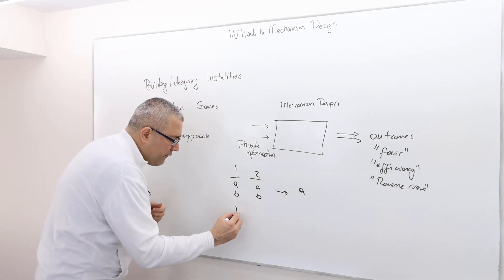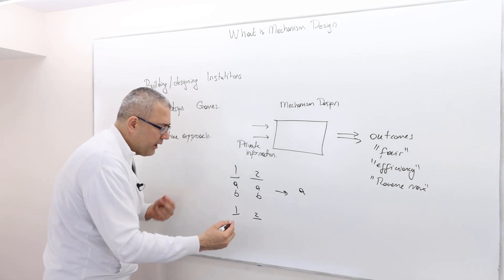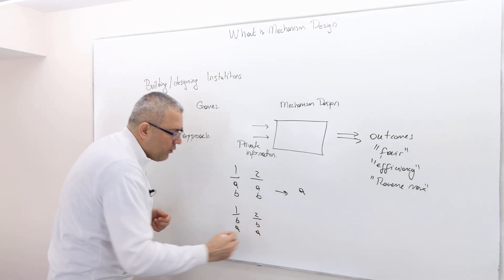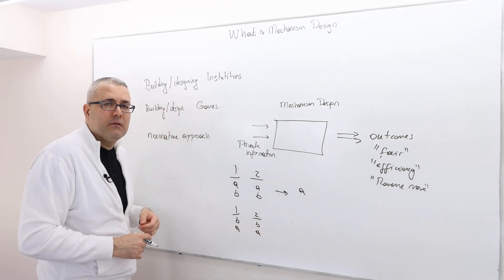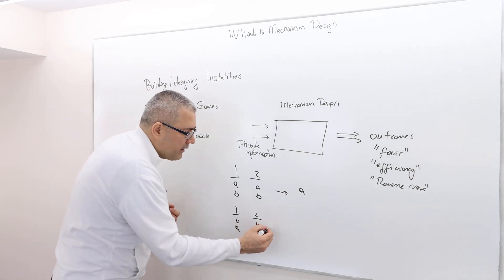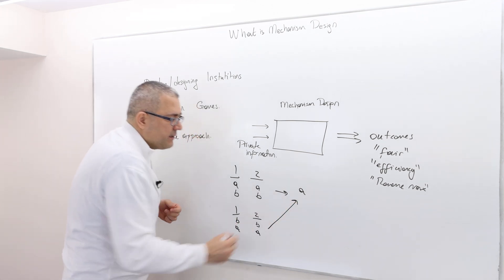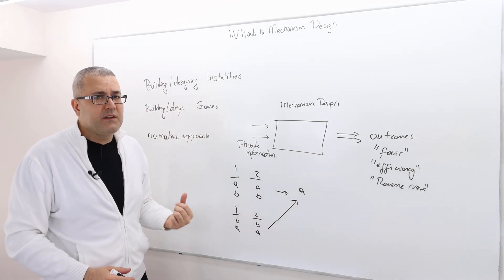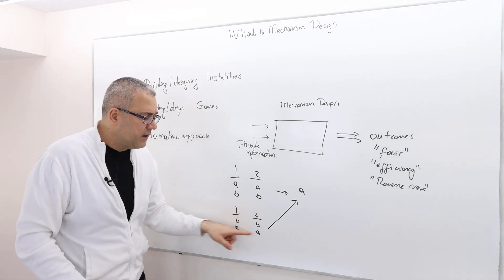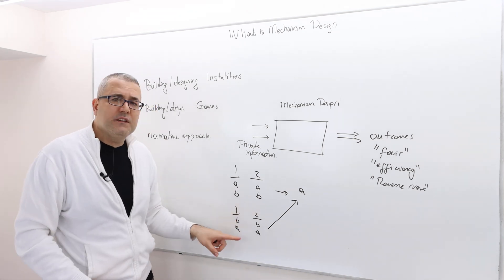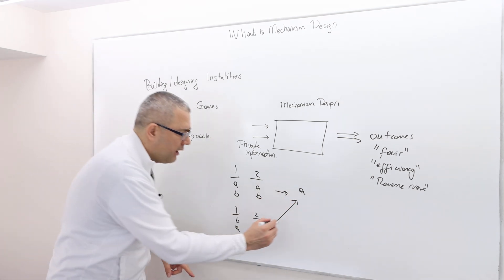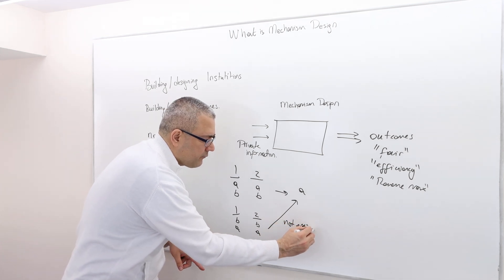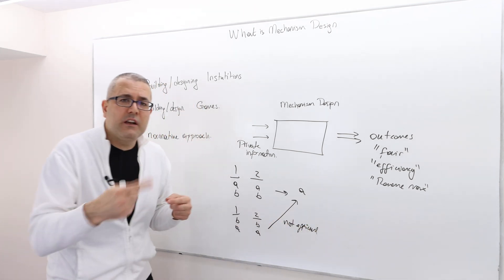But what if voter one and voter two actually rank B over A? Then is giving outcome A still efficient? No, it's not. In this scenario, the efficient outcome is not A.